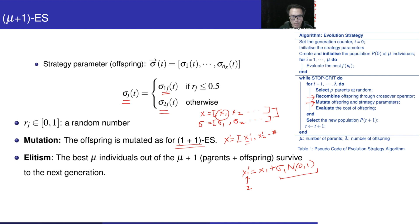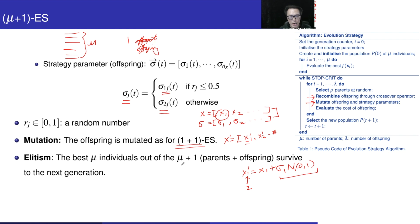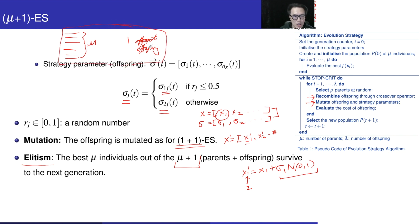At this point, we need to think about how many individuals we have in the population. We have the parent group, totaling mu individuals. We then generate one offspring. In total, we have mu plus 1 individuals. We implement elitism: among the mu parent individuals and this one offspring, we pick the best mu individuals to act as the population in the next iteration.